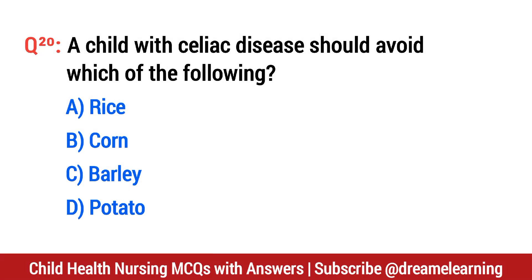Question number 20. A child with celiac disease should avoid which of the following? The right option is C: barley (gluten-containing grains).